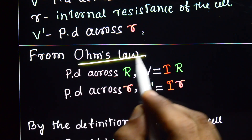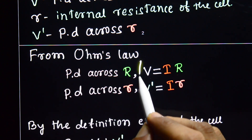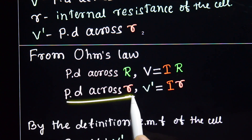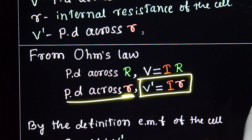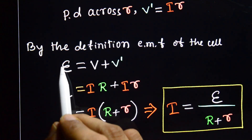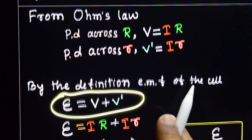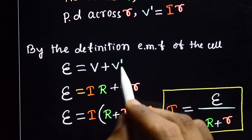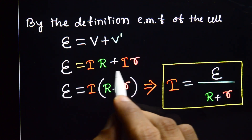From Ohm's law, the potential difference across capital R: V is equal to I into R. The potential difference across small r: V dash is equal to I into small r. And by the definition of EMF, E is equal to V plus V dash — that is I into R plus I into small r.